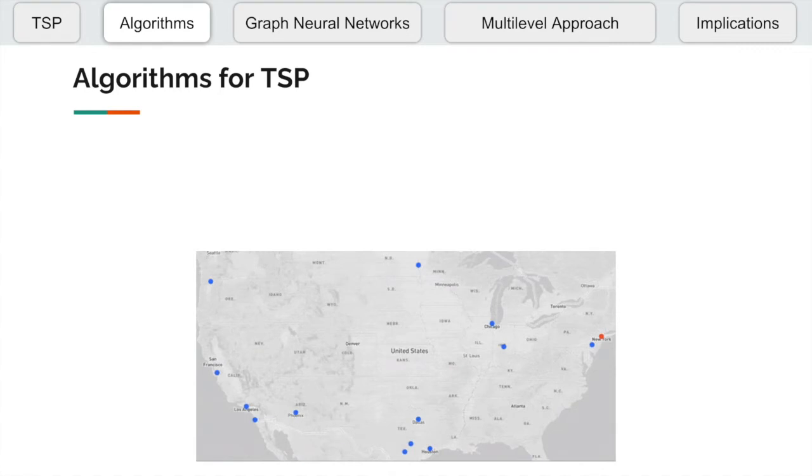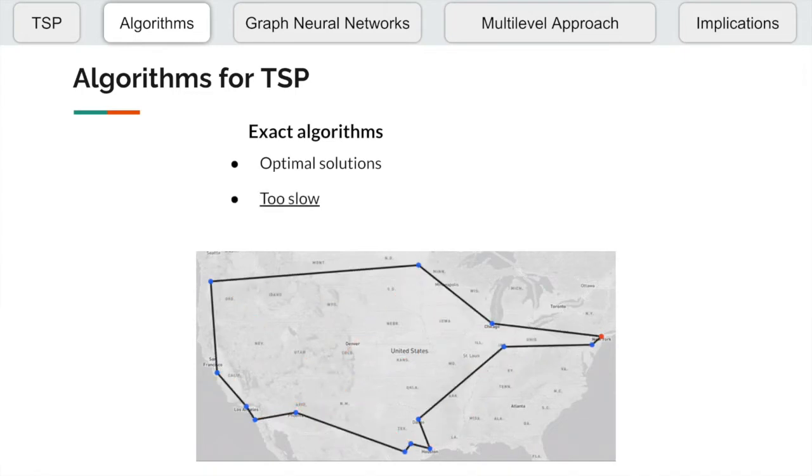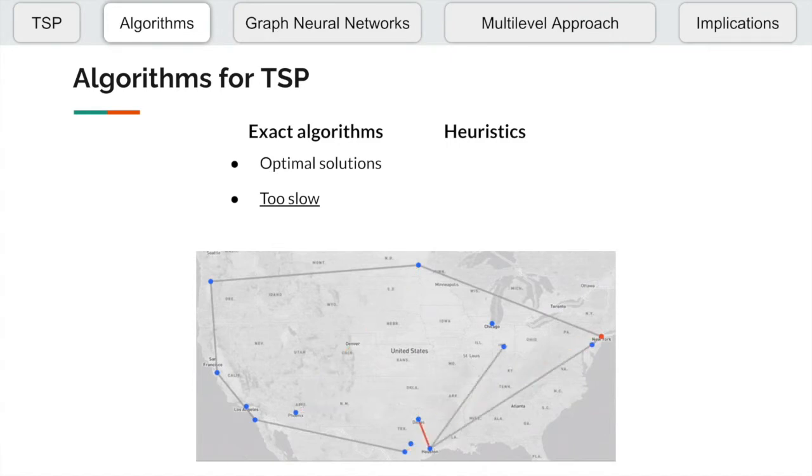There are mainly two types of algorithms for the TSP. There are exact algorithms which give optimal solutions but are too slow for large graph sizes. Then there are heuristics which are much faster but give approximate solutions and require extensive research to formulate.